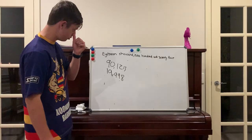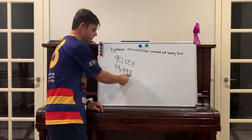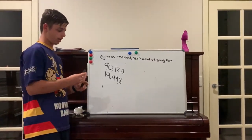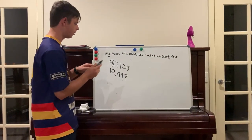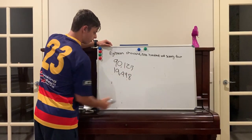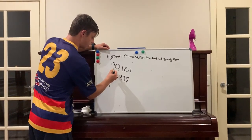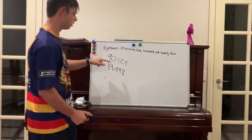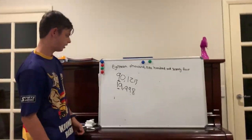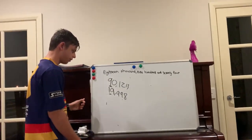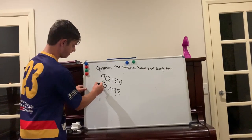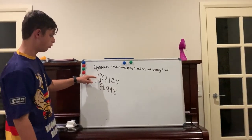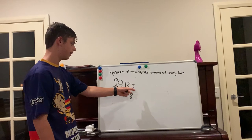Sometimes students can get confused — they'll see all these high digits and just assume it's the higher number. But to determine which number is higher, you start from left to right. The 9 in the 10s of 1,000s is higher than the 1, so that makes 90,123 higher than 19,998. Even if the next digit were a 7, the 9 is still bigger than the 7, so the 90,000 number is bigger.